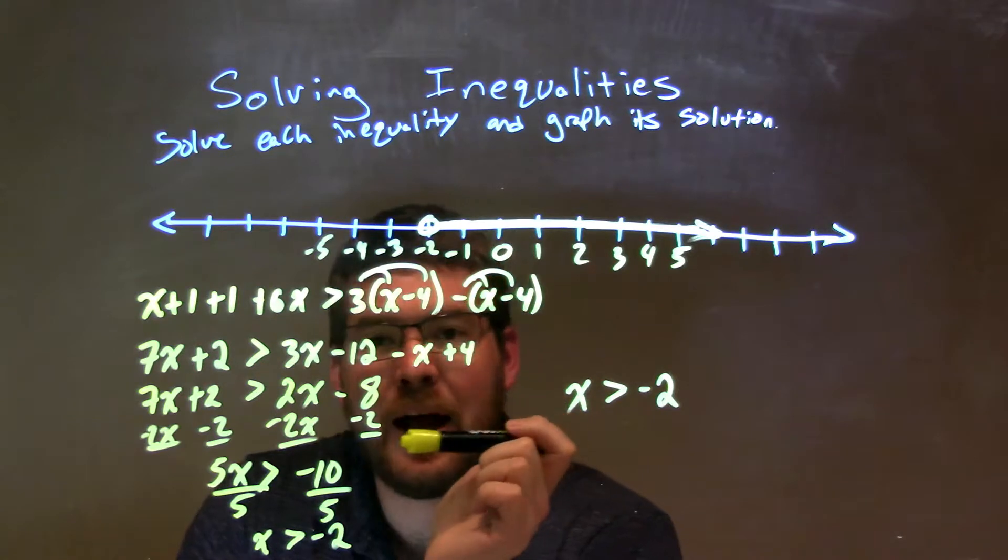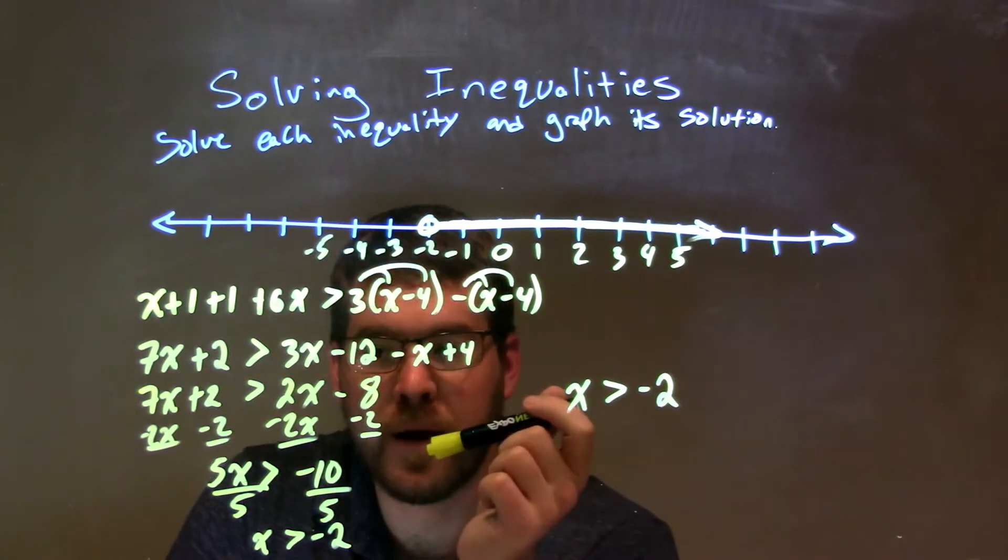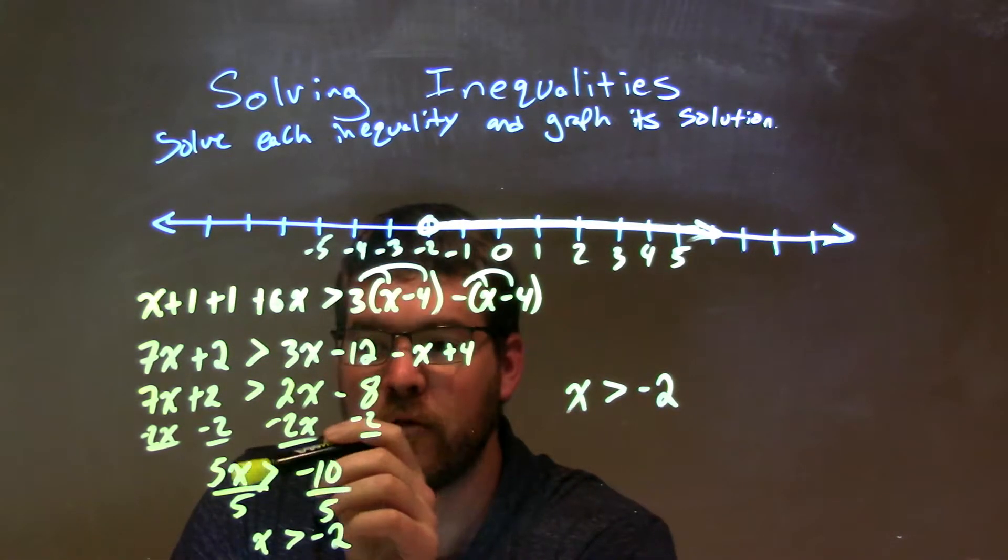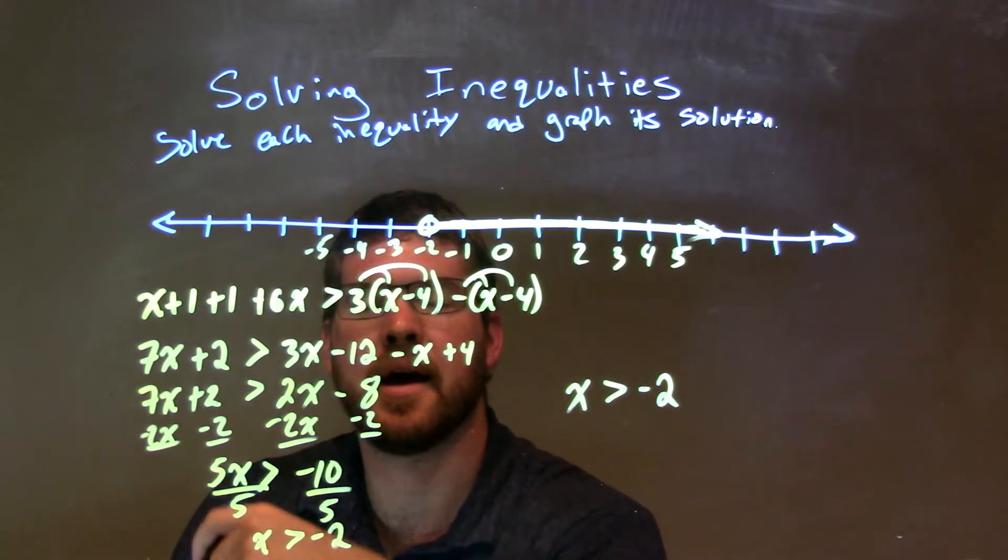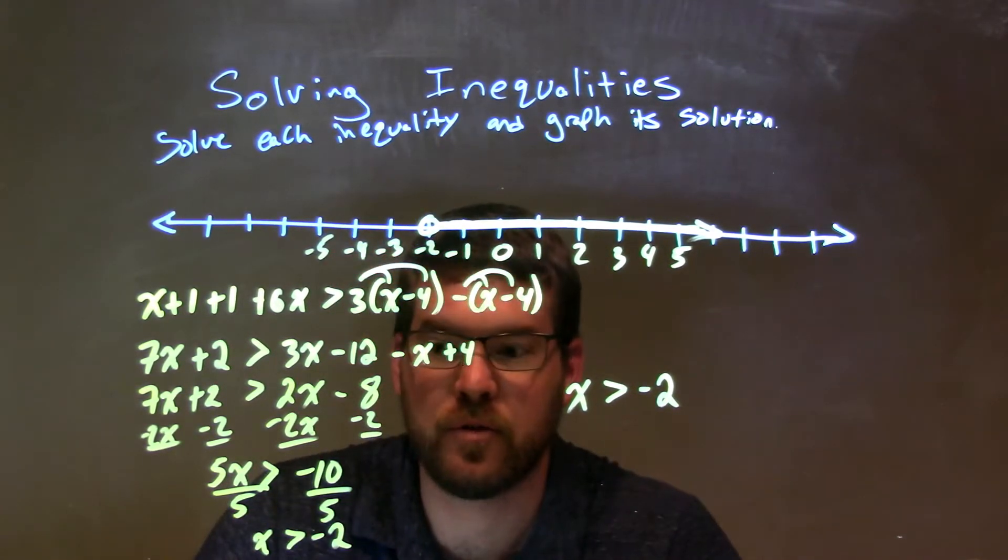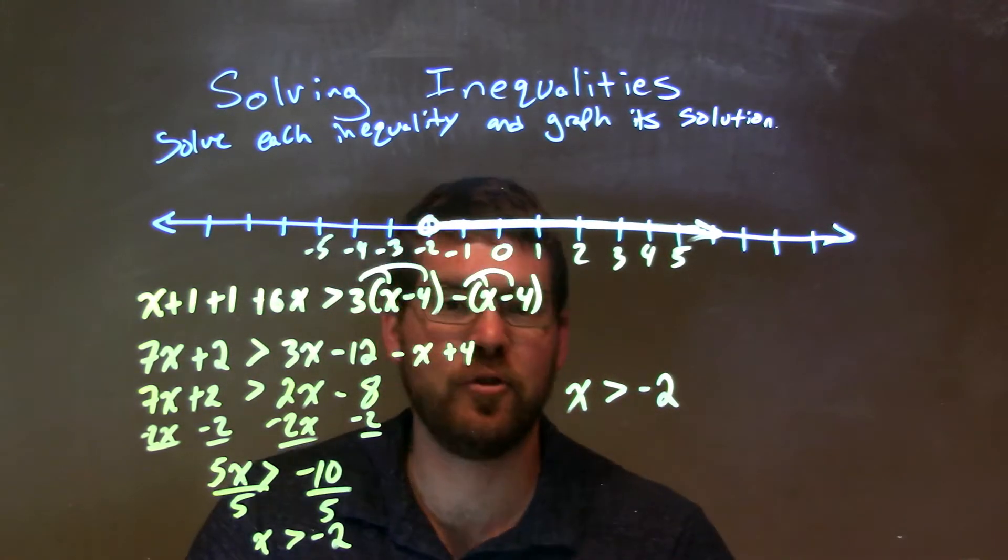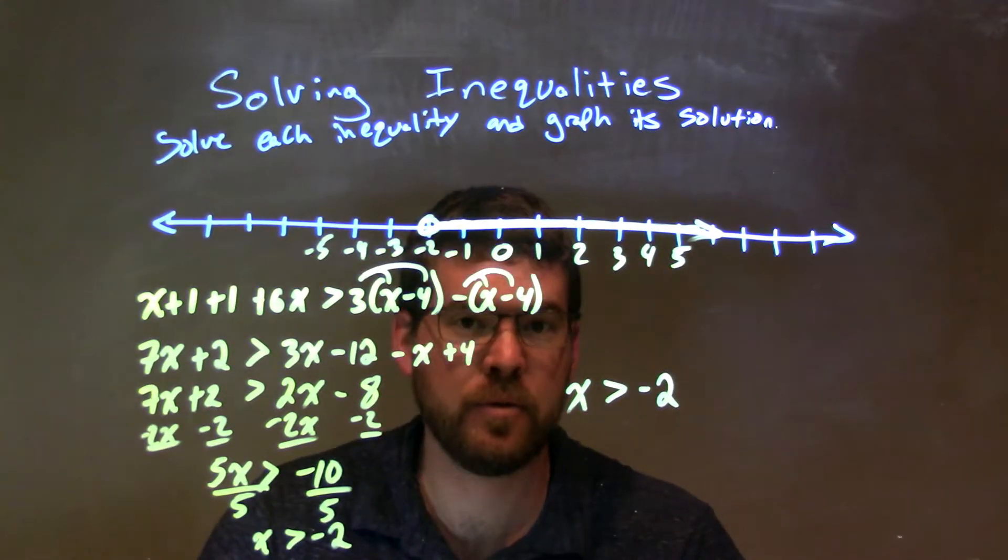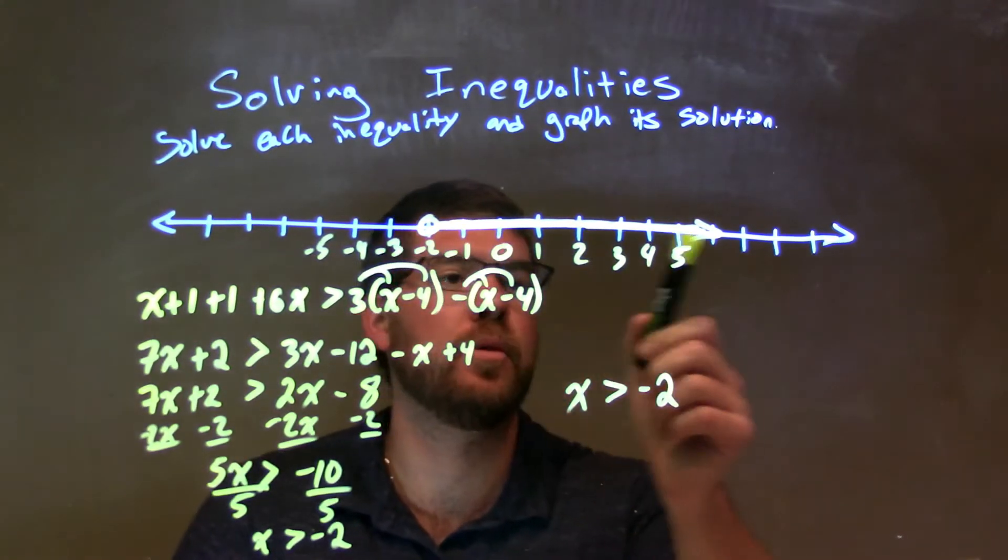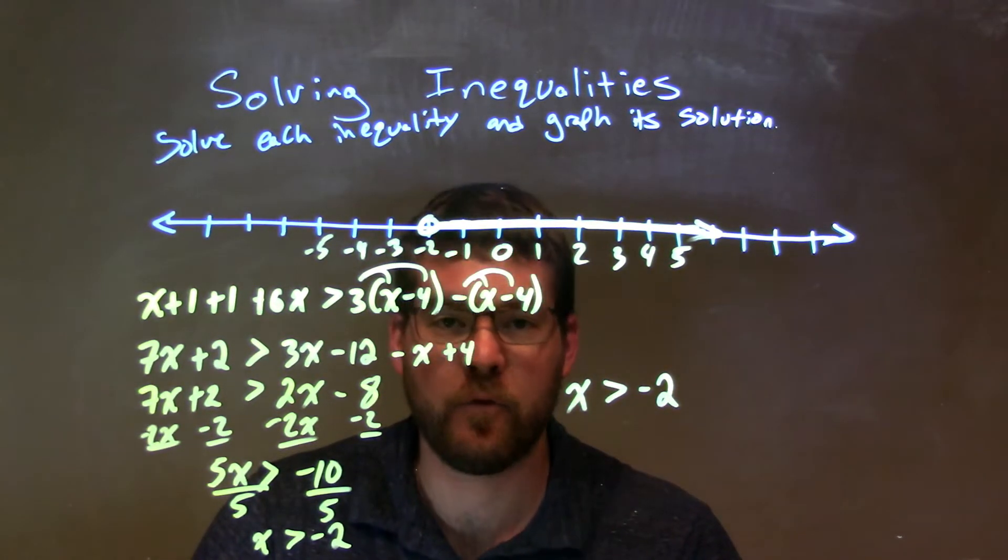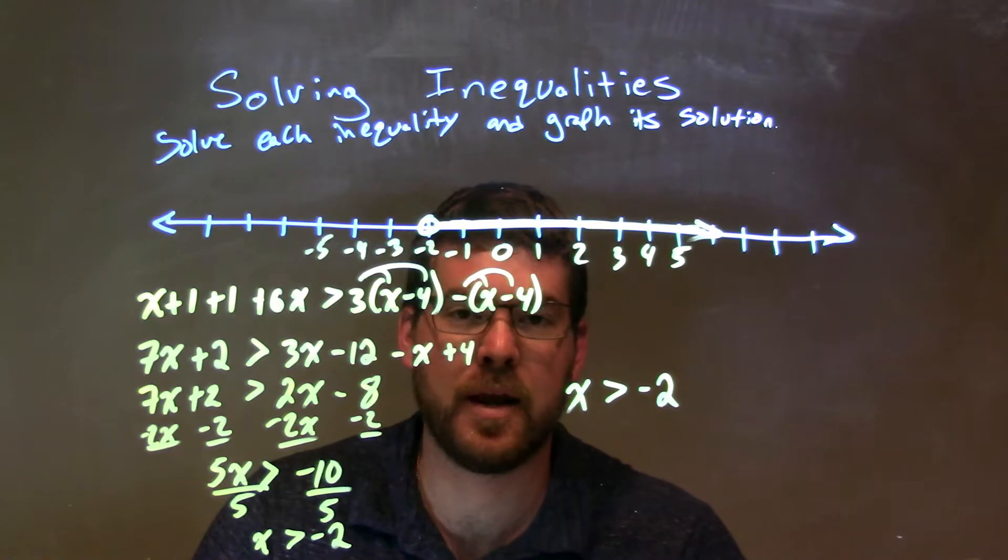And then I brought all my x's to the left and my numbers to the right. That gives me a final little part here of 5x is greater than negative 10, divided by 5, and I got x by itself. So, I get x is greater than negative 2. We have an open circle at negative 2 because x is not equal to negative 2, it's just greater than, so we shade to the right. And then we have a final answer, just x is greater than negative 2.